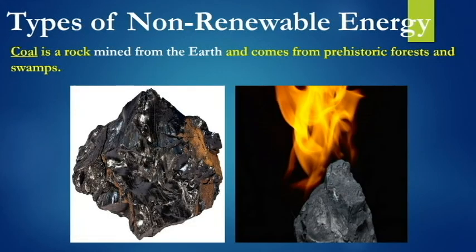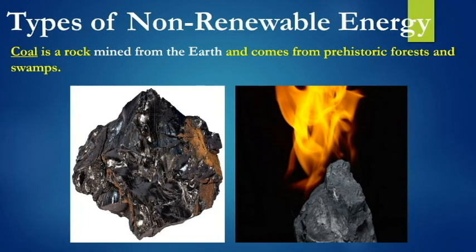The first type is coal. The picture I have on the bottom left here shows a really nice sample of coal. In particular, I think it's called bituminous coal — it actually might even be anthracite. It has a nice luster to it, it's really shiny. Coal is mined from the Earth — it's pulled out of the Earth. And coal comes from prehistoric forests and swamps that were on Earth a very, very long time ago.